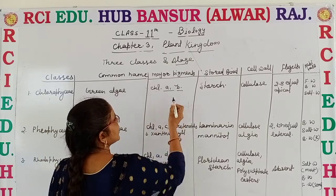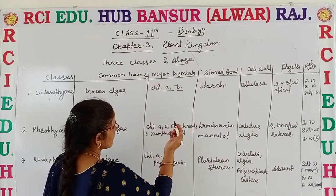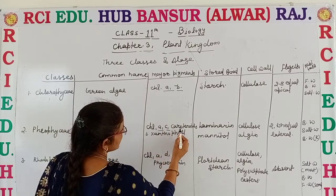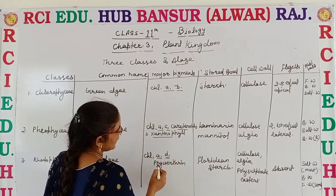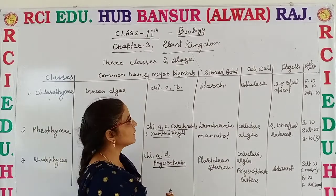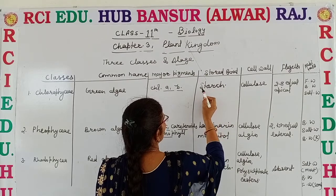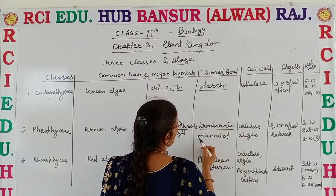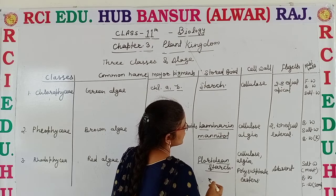Chlorophyceae contains chlorophyll A and B, which are the major or dominant pigments. Phaeophyceae contains chlorophyll A, C, carotenoids, and xanthophylls. Red algae contains chlorophyll A and D, and a large amount of phycoerythrin, which is responsible for the red color of red algae. For stored food: Chlorophyceae stores food as starch; Phaeophyceae stores food as laminarin and mannitol; and red algae stores food as floridean starch.